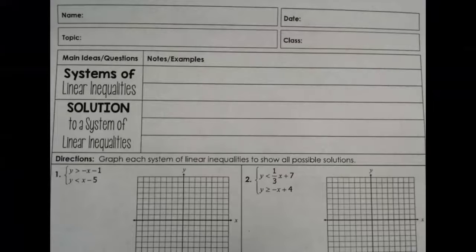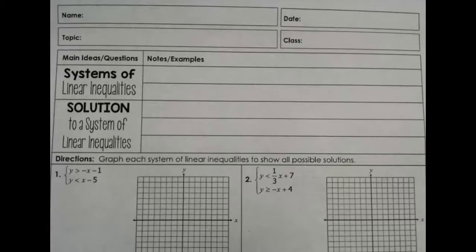Welcome to this video on graphing systems of linear inequalities. We just finished with systems of equations, so these are inequalities. By the end of this video, you should be able to determine whether you need to use a solid or dotted line based on the inequality symbol, appropriately shade the solution set of a linear inequality, and graph the solution to a system of linear inequalities in two variables as the intersection of two half planes.